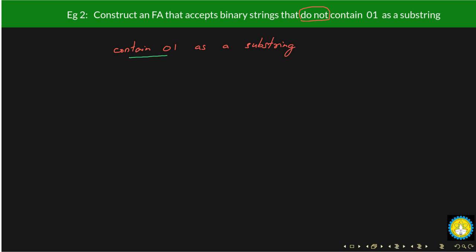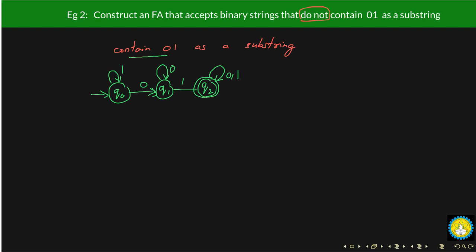We have already seen this example. Let's design it again. Q0 is our starting state. From Q0, upon getting a zero, move to Q1; upon getting a one from Q1, move to Q2, which is our final state. From Q0, if you see a one, you stay at Q0. From Q1, if you see a zero again, stay at Q1. From Q2, you can see either a zero or a one and remain at Q2. This DFA accepts all binary strings containing zero-one as a substring.